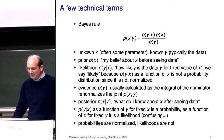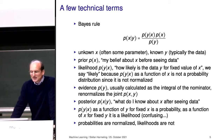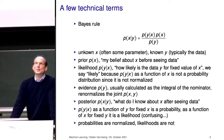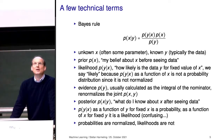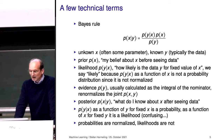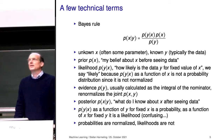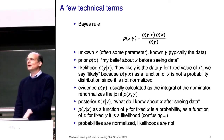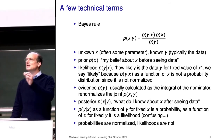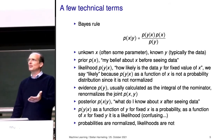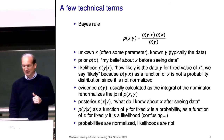At the end we have the posterior — what we know after seeing the data. We start with p(x), what we know before seeing the data, and then we have another description of what we know after seeing the data. Bayes' rule tells us what to do. Probabilities are normalized; likelihoods are not — though the likelihood is normalized if you fix x and integrate out y, but not normalized with respect to x.